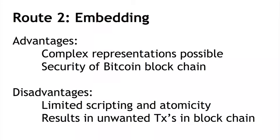Normally, one might think that for more complex representations you'd have to use an altcoin — an entirely separate chain — that allows those representations. But instead, what embedding allows you to do is combine the idea of getting complex representations with utilizing the security of the Bitcoin blockchain with all the mining hash power behind it. On the other hand, the scripting and atomicity are limited by Bitcoin itself, and these new representations might not interact well with Bitcoin's existing atomicity and scripting properties.